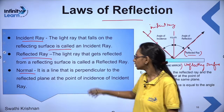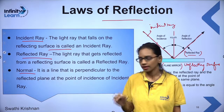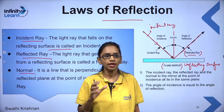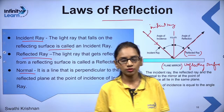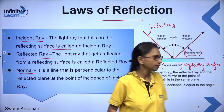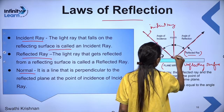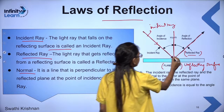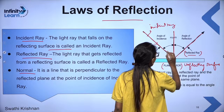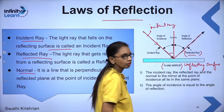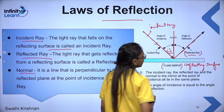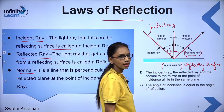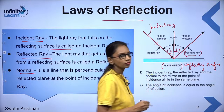The normal is an imaginary line — it is the line that is perpendicular to the reflecting plane at the point of incidence of the incident ray. The normal makes a 90-degree angle with the reflecting surface, and we calculate it from the point of incidence. The angle that the incident ray makes with the normal is called the angle of incidence, and the angle that the normal makes with the reflected ray is called the angle of reflection, denoted by small r.